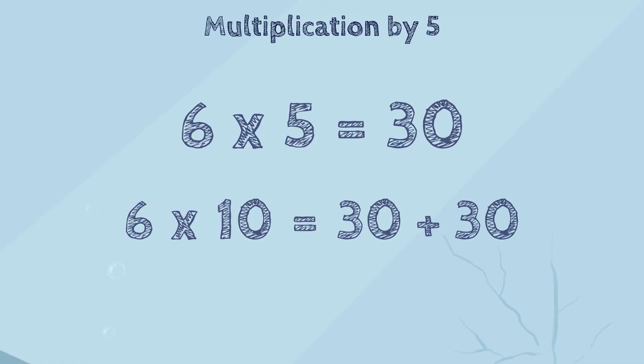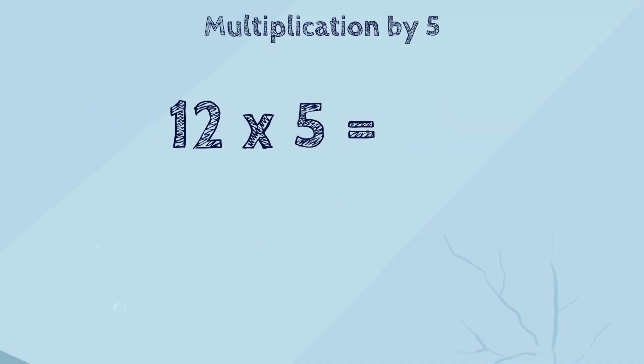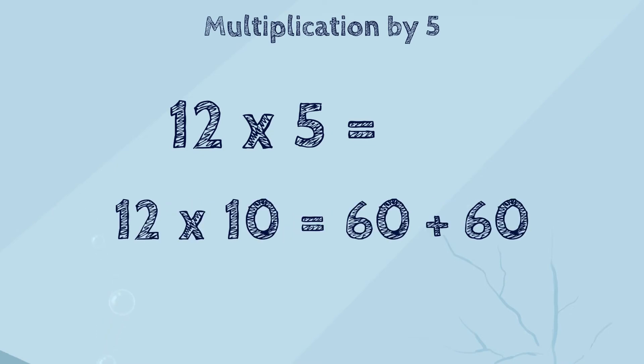Let's try one more problem. 12 times 5. We can easily figure out that 12 times 10 is 120. And then, what is half of 120? It's 60. Yes, that's right. So, 12 times 5 is 60.